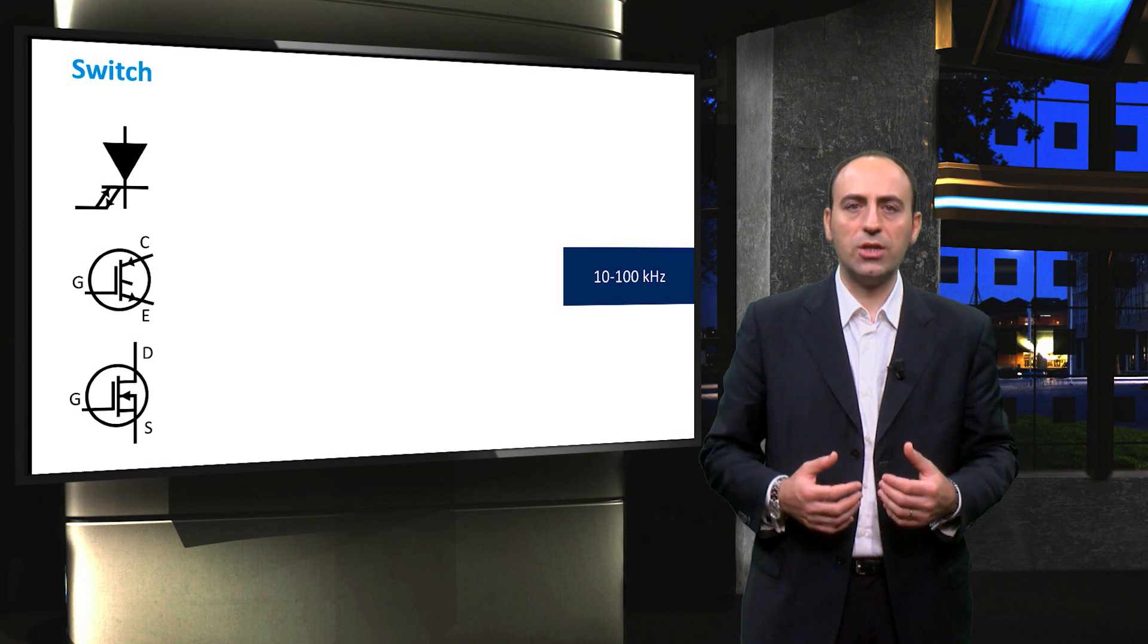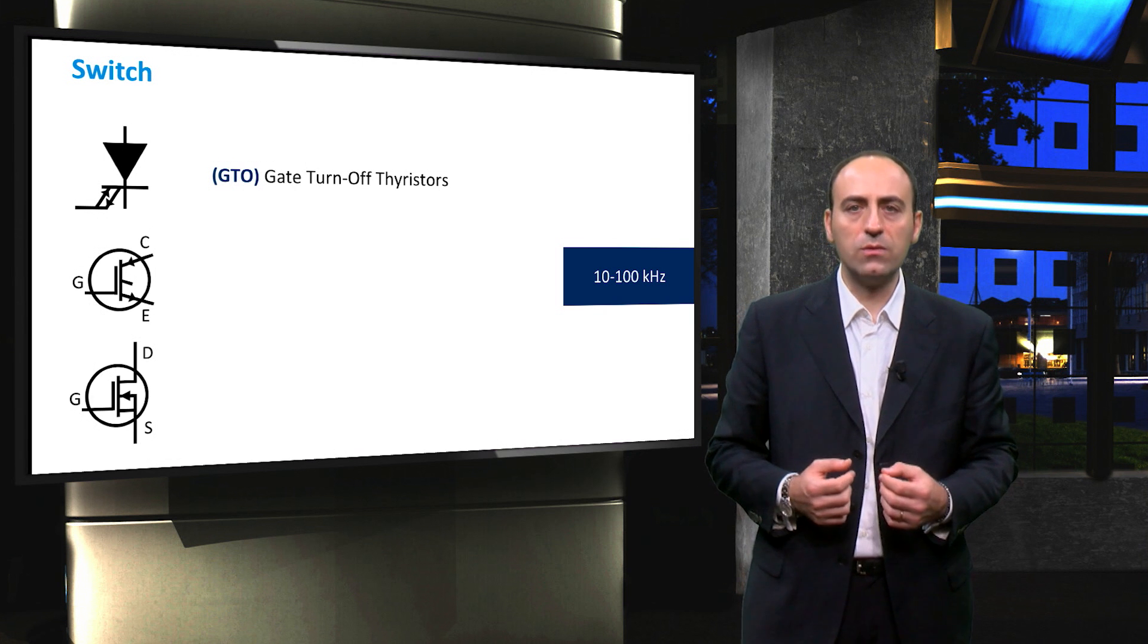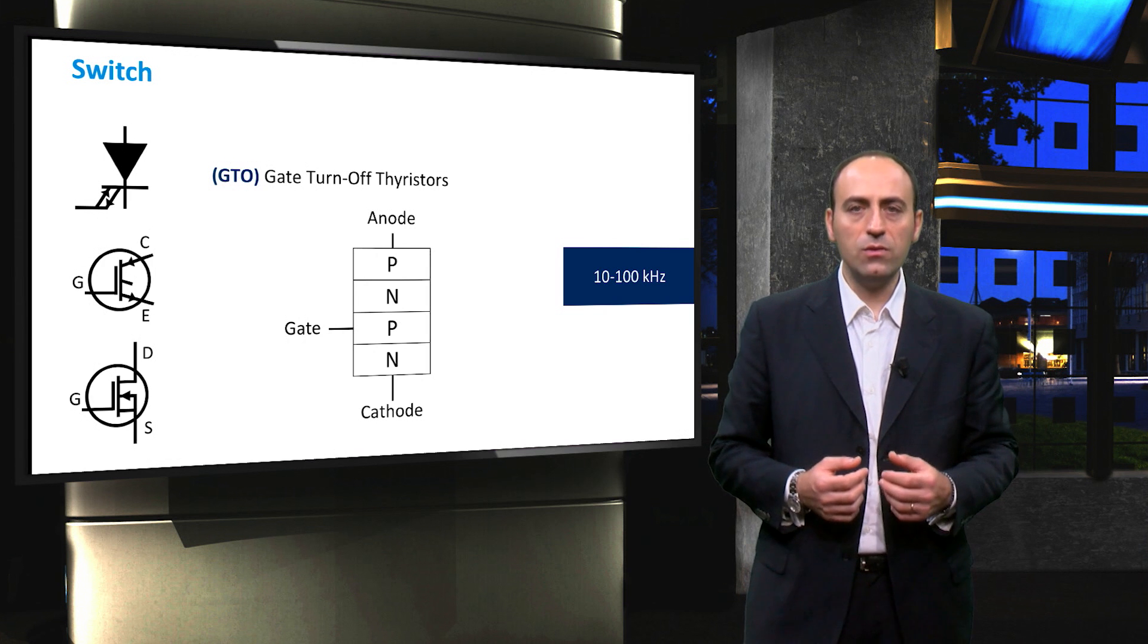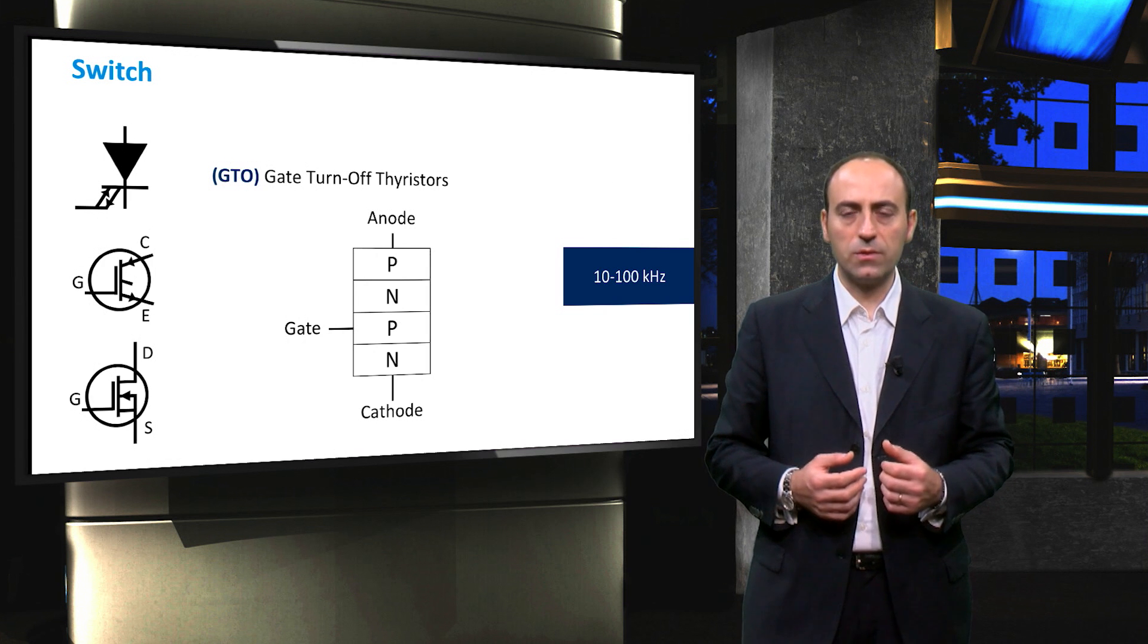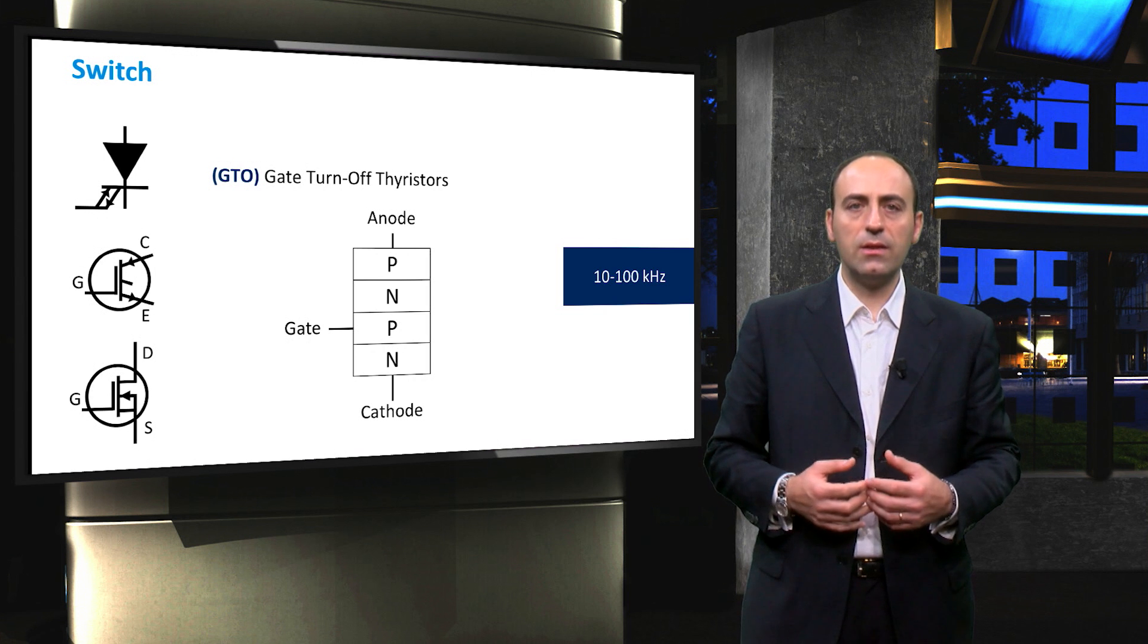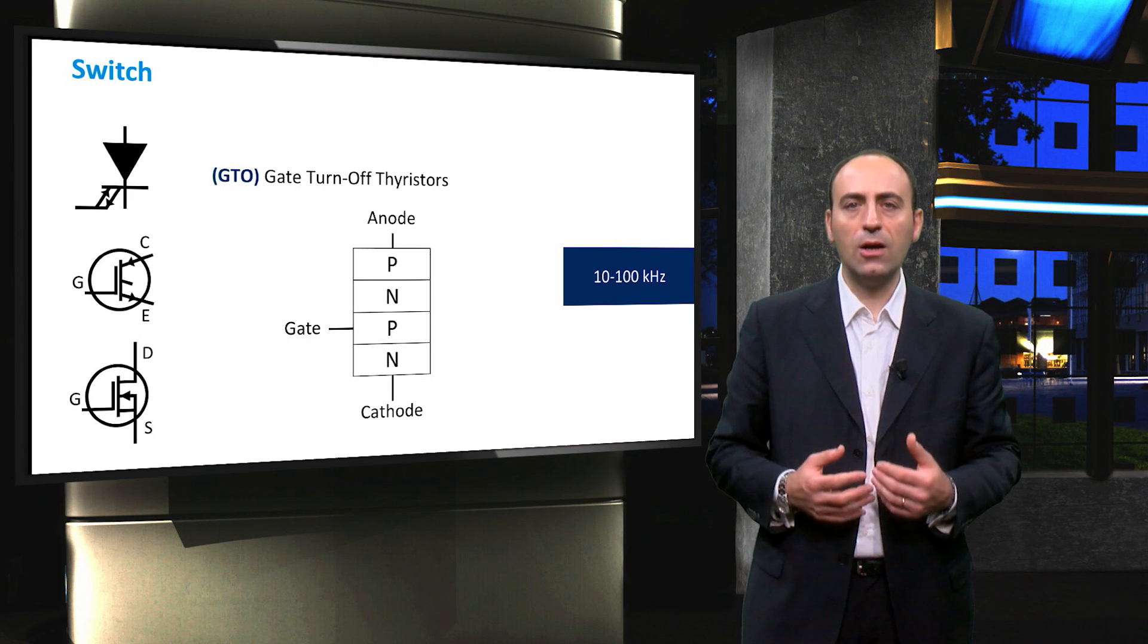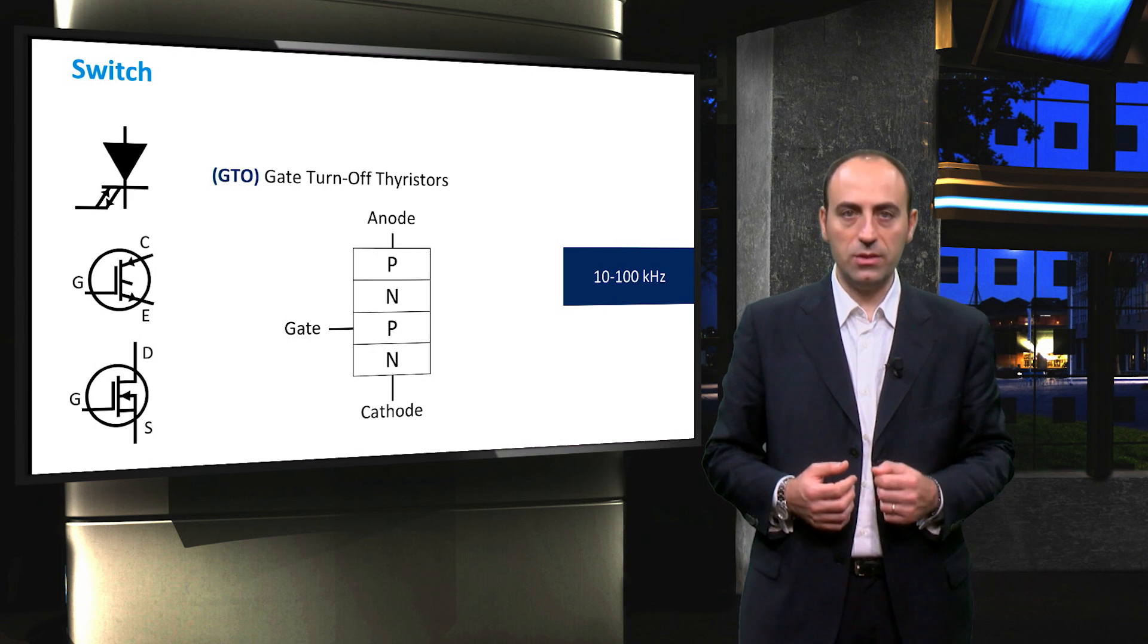Traditionally, thyristors such as gate turn-off thyristors were used as switches, and basically it is an electronic component consisting of PN-PN layers, and thus it contains three PN junctions. One disadvantage is that thyristors cannot be turned off, but only turned on. Such switches lead then to a very high harmonic content, requiring additional filters in order to make the output compatible with the electricity grid. Nowadays, thyristors are only used for inverters with a power of 100 kW and above.